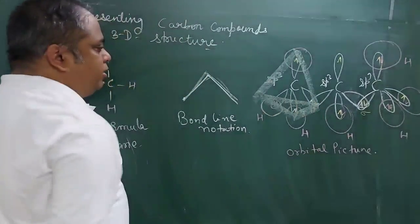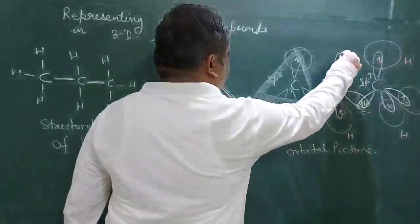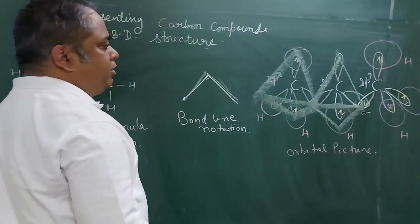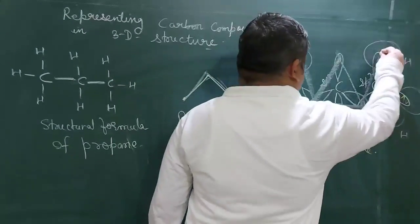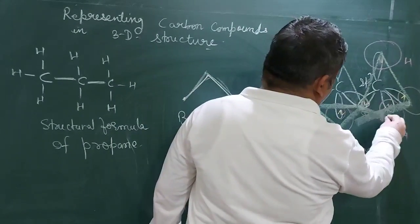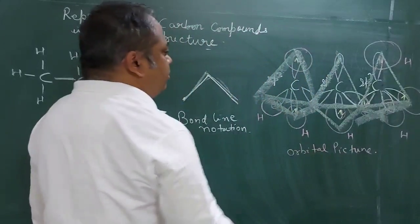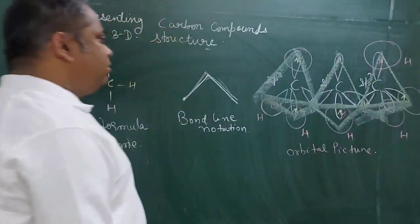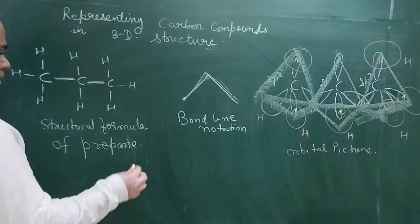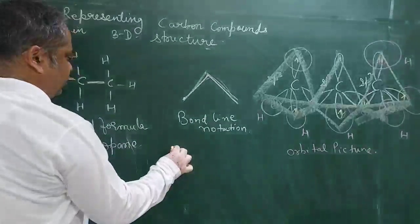One tetrahedron, another tetrahedron, another tetrahedron. So to keep our work simple, we can show this by wedge line notation formula.